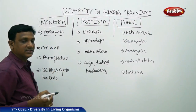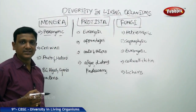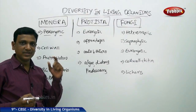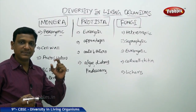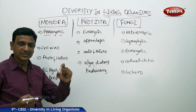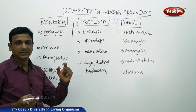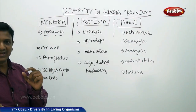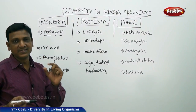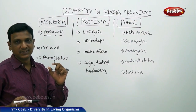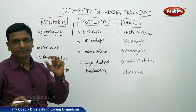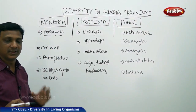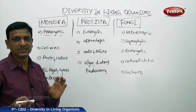Monerans are prokaryotic organisms — organisms that do not have a distinct nucleus and cell organelles. They are unicellular, and even in their cells they do not have a specific nucleus; their nuclear material is not enveloped by a membrane. In contrast, we are eukaryotic — our cells have a distinct nucleus enveloped by nuclear membranes, with other organelles also covered by membranes. Monerans lack both a specific nucleus and cell organelles.